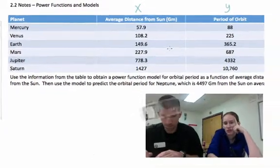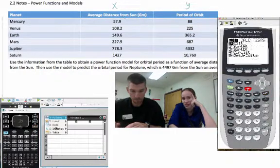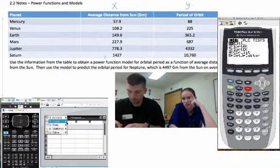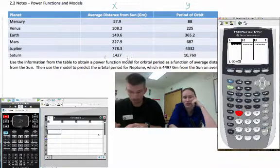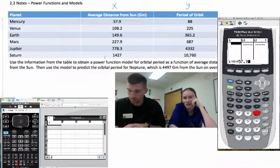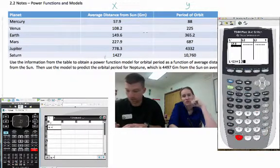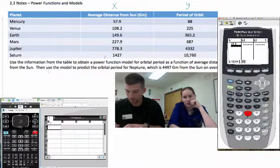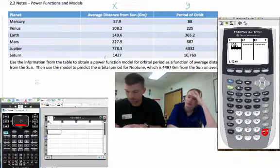Now on the 84, you start off by going to stat and then edit, and you put these into a list. On the Inspire, you have to go to list and spreadsheet. You have to create a new spreadsheet and insert this in. You have to put in an x at the top and a y at the top on the Inspire. You can see all of that happening. That's how you do it as well, and then you just have to type in.